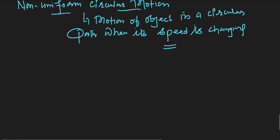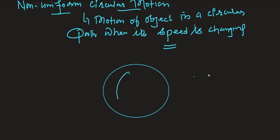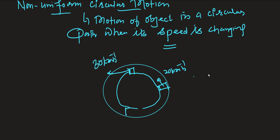Suppose you have a circular track and a car is traveling in the circular path at different speeds. Suppose at one point the speed is 20 km/h, at another point the car speed is 30 km/h, and when the car reaches yet another point its speed is 60 km/h. What is happening here? Its speed is changing at different points. That is why this type of motion is called non-uniform circular motion. Uniform circular motion has constant speed; non-uniform circular motion has continuously changing speed.